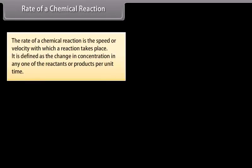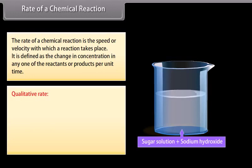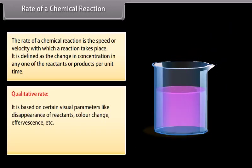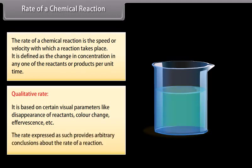The rate of a chemical reaction is the speed or velocity with which a reaction takes place. It is defined as the change in concentration in any one of the reactants or products per unit time. It can be expressed by two ways. Qualitative rate: it is based on certain visual parameters like disappearance of reactants, colour change, effervescence, etc. The rate expressed as such provides arbitrary conclusions about the rate of a reaction.